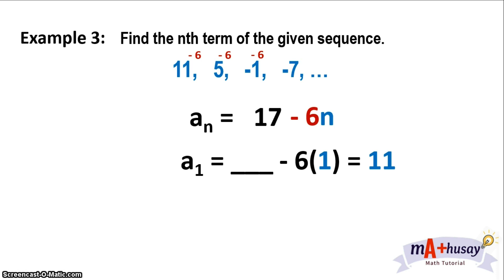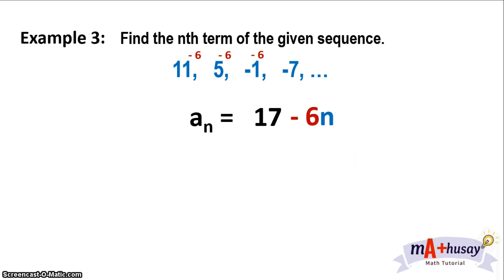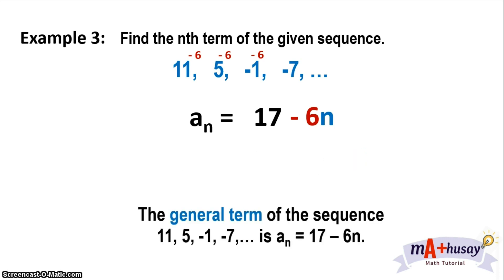So we add 17 to negative 6n. We check with n equals 2: 17 minus 6 times 2 is 17 minus 12, which gives positive 5 — that's the second term. In general, the sequence 11, 5, negative 1, negative 7, and so on, can be generated through the nth term: a sub n equals 17 minus 6n.